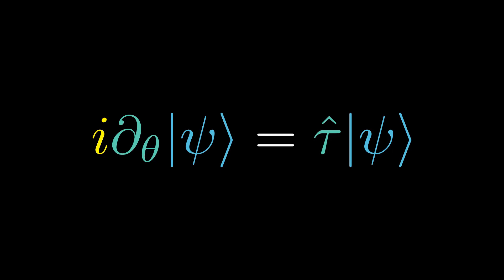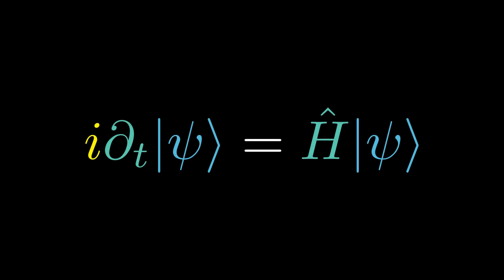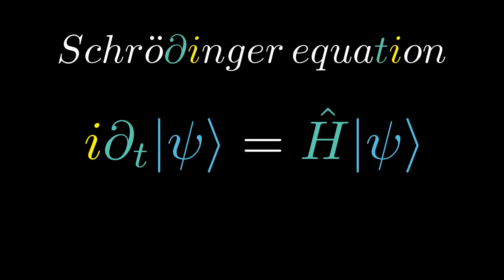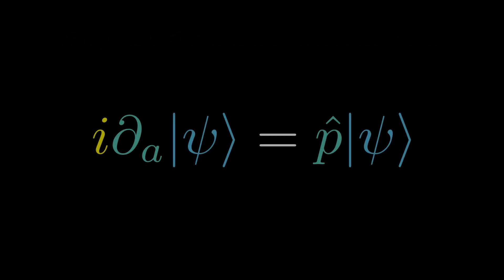The master equation is i partial theta psi equals tau hat psi. We'll be interested in solving the master equation in the rest of this video, which states some arbitrary measurable quantity tau evolves the system with respect to some parameter theta. The Schrödinger equation is when the measurable quantity is energy and parameter is time. I will also display the momentum and angular momentum analog of the Schrödinger equation on screen for future reference.